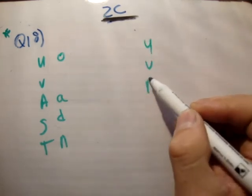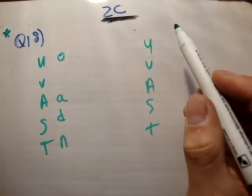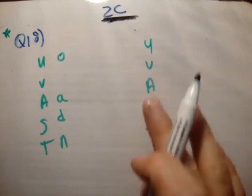So, I'll say u, v, a, s, t. This is part 2, and we'll talk about that in a second. So, let's fill out what we know.